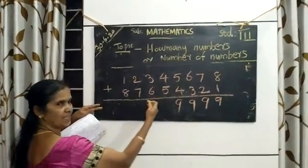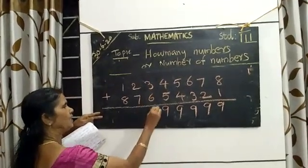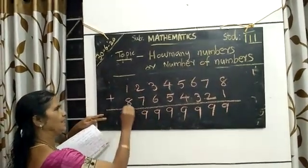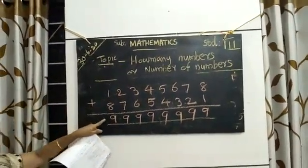Again repeating the digits: 5 plus 4 equals 9, 6 plus 3 equals 9, 7 plus 2 equals 9, 8 plus 1 equals 9. All the numbers are 9.